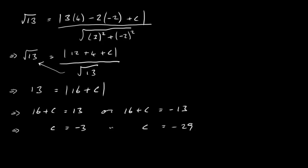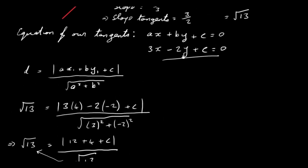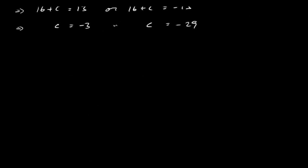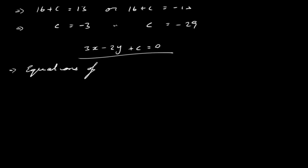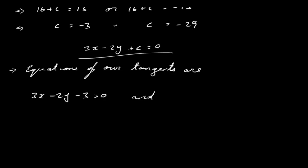We have our two values for C. Substituting back into 3x − 2y + C = 0, the equations of our two tangents are: 3x − 2y − 3 = 0 and 3x − 2y − 29 = 0. Those are the equations of the two tangents to the circle.